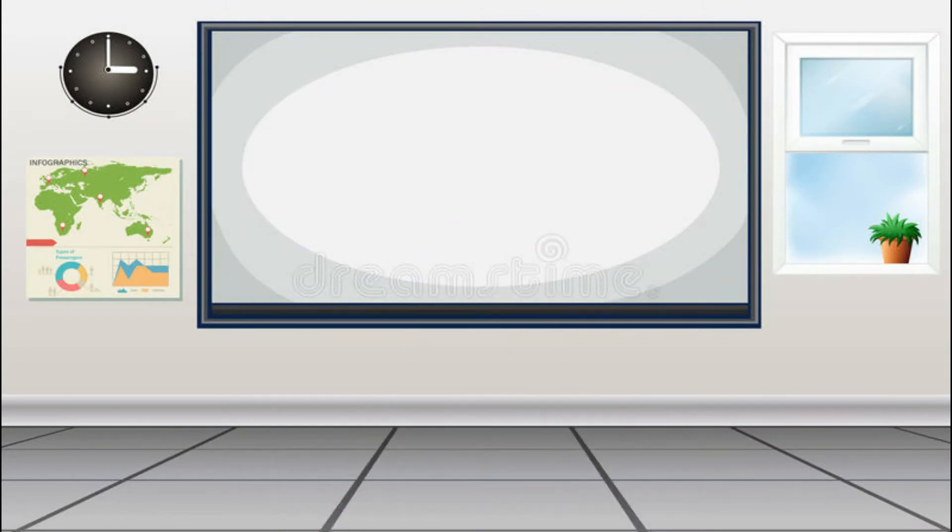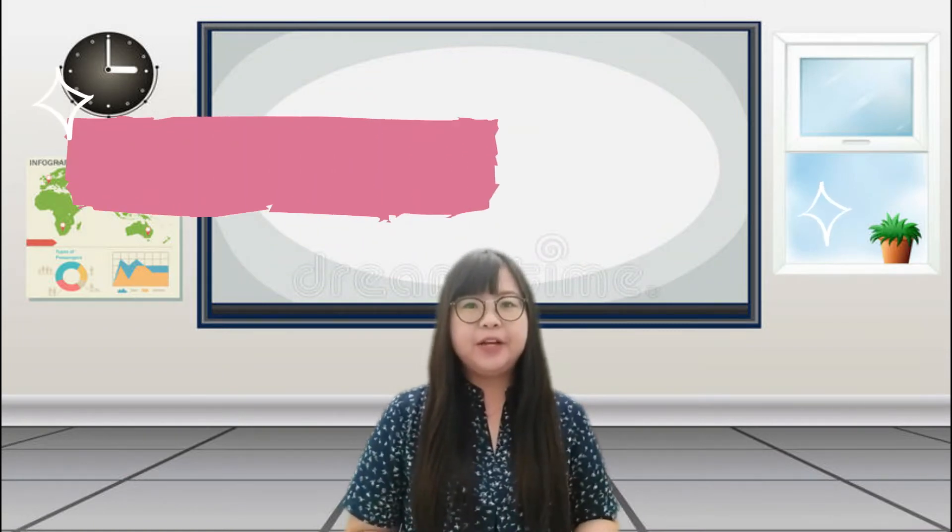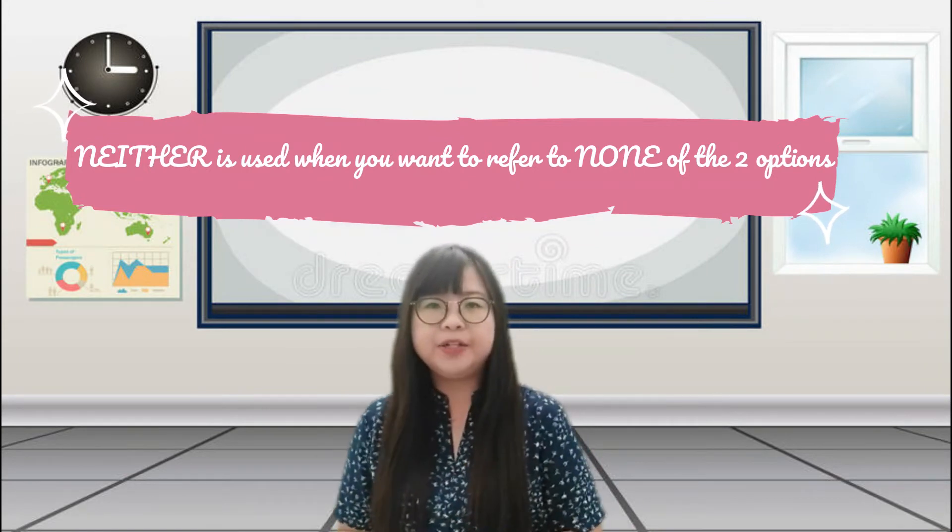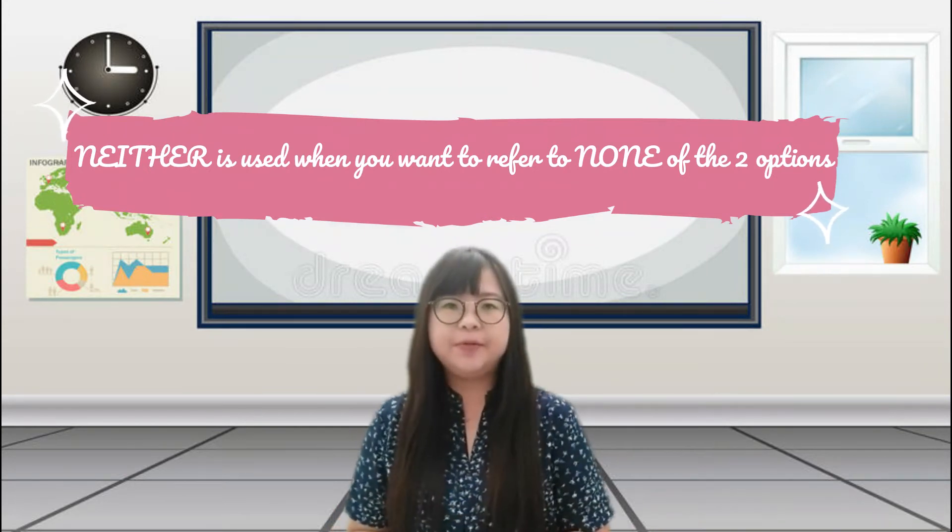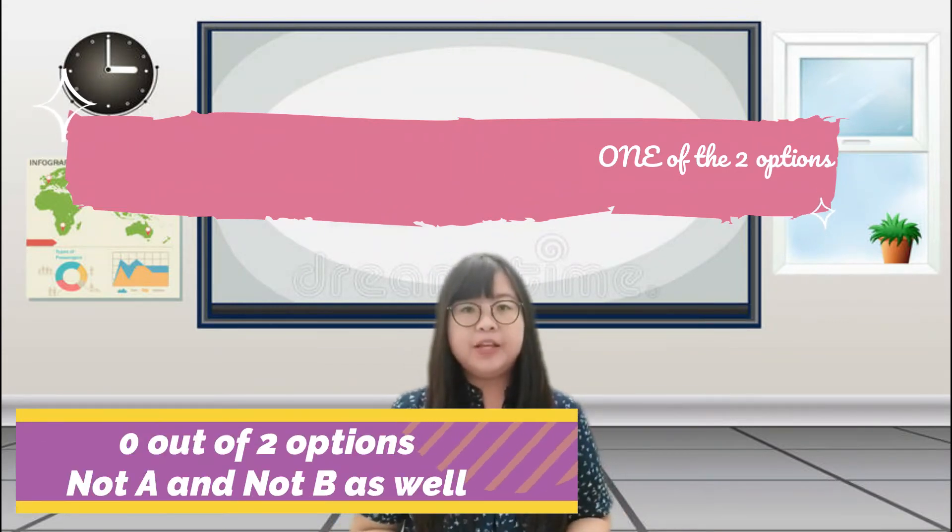I hope you understand about the usage of both and either. Now let's move on to the word neither. Neither is used when you want to refer to none of the two options or none of the two alternatives, or you can say zero out of two. For example, when you say 'I like neither Math nor Science,' it means you don't like Math and you don't like Science as well.